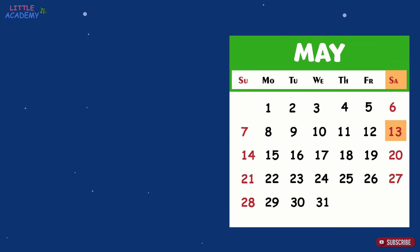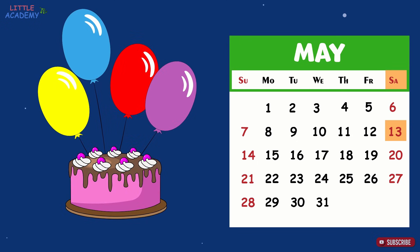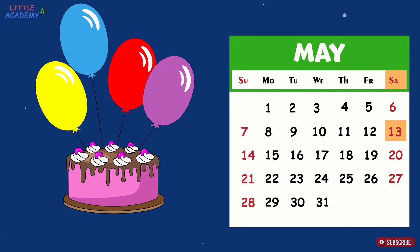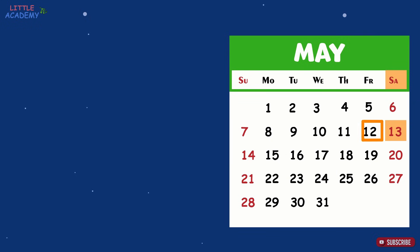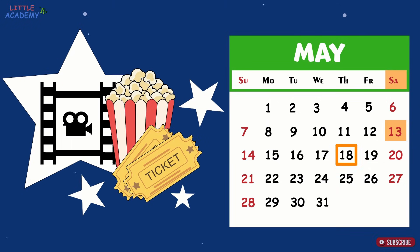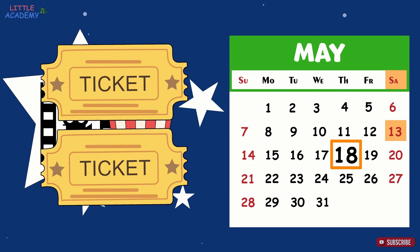For example, if our birthday is on the 13th of May, then looking at the calendar we can see that it will be Saturday — the weekend — so on that day we can invite our friends over to a birthday party. If next week on Thursday we decide to go to a movie with our friends, then looking at the calendar we can see that next Thursday will be the 18th of May, so we need to order the tickets for May 18th.